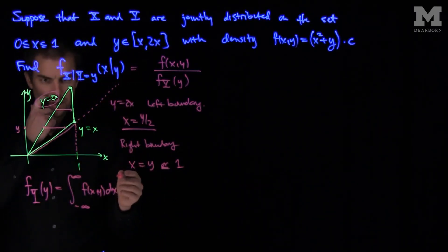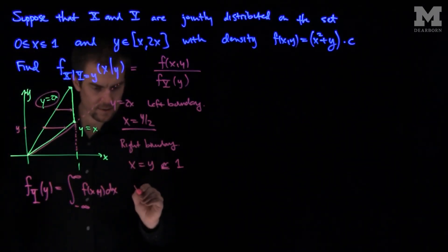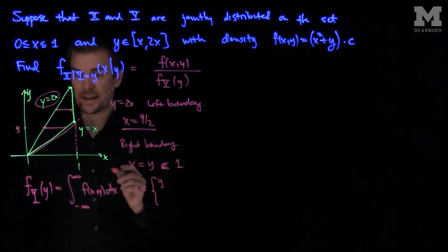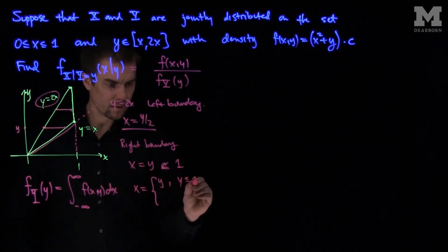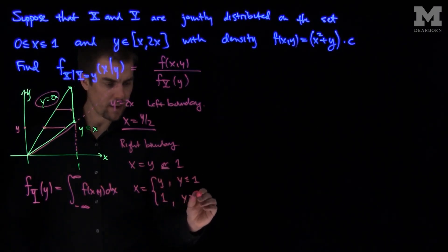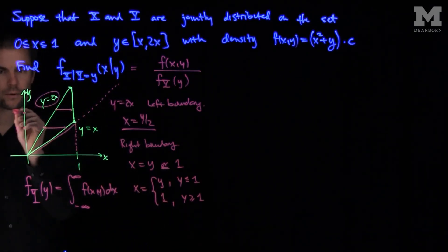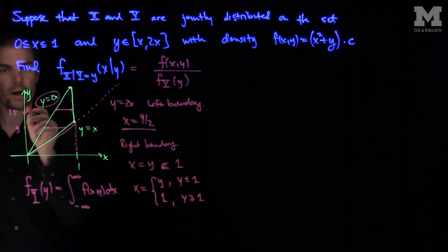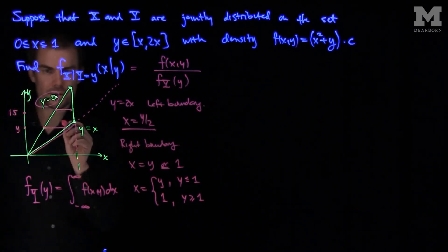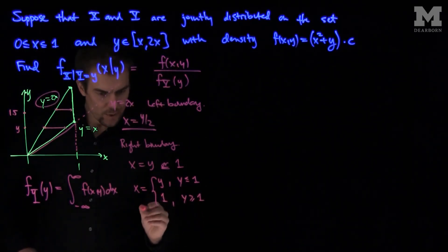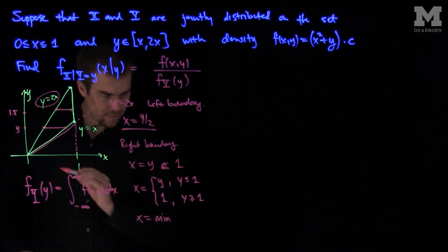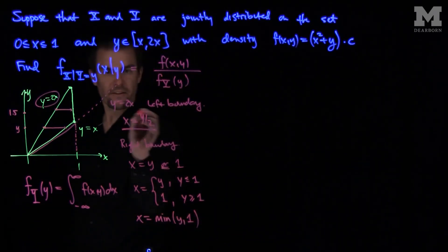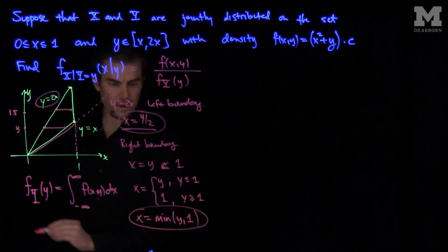So x is equal to a piecewise function: it's equal to y if y is less than 1, or it's equal to 1 if y is greater than or equal to 1. For example, if y equals 1.5, then x would go from y over 2 all the way to 1. So x's right boundary is the minimum of y and 1, and the left boundary is y over 2.